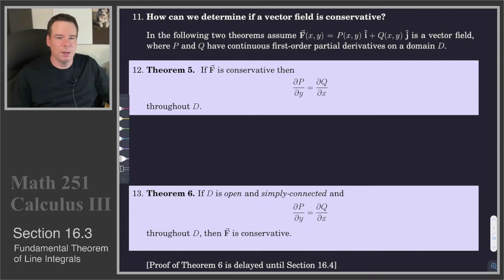Now we'll see a straightforward method for determining whether a vector field is conservative. In what follows, we'll assume that our vector field is a two-dimensional vector field and P and Q, the components of our vector field, have continuous first-order partial derivatives on the domain that we're interested in.